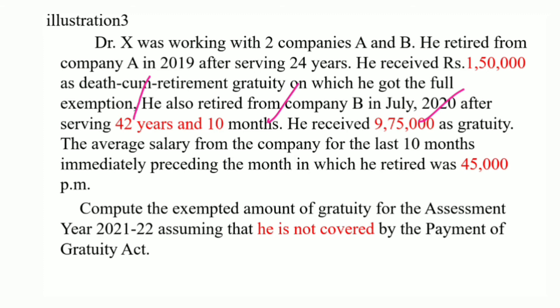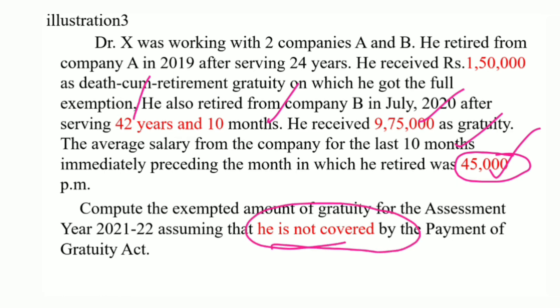The average salary from company B for the last 10 months immediately preceding the month of retirement was Rs. 45,000. We need to compute the exempted amount of gratuity for the assessment year 2021-22, assuming he is not covered by the Payment of Gratuity Act.